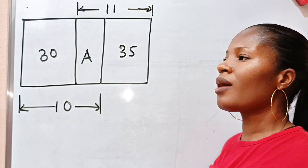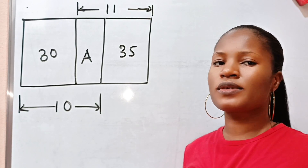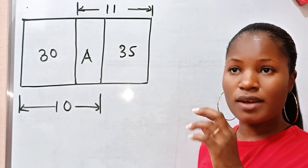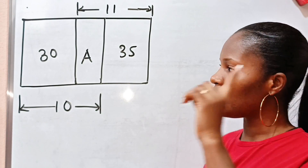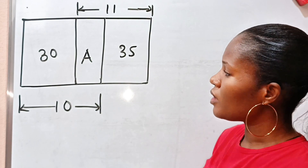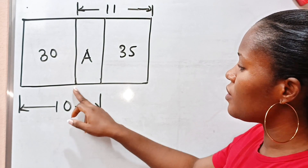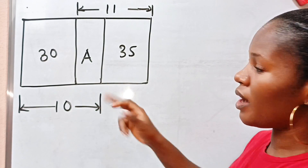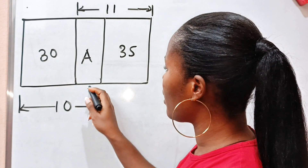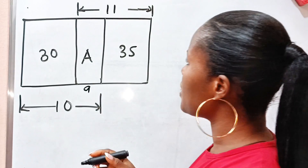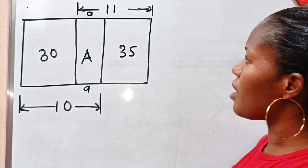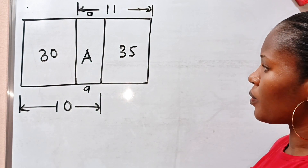We are going to solve this using two different methods. The first method: let us call the length from here to here small a. If this is small a, then this is small a as well.